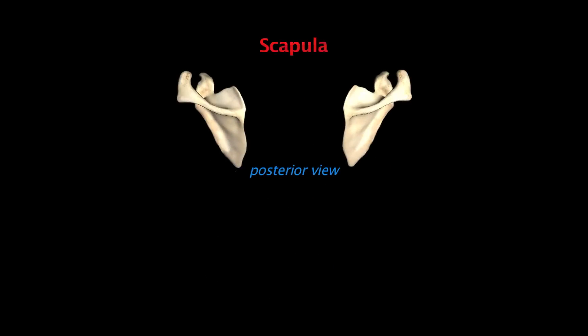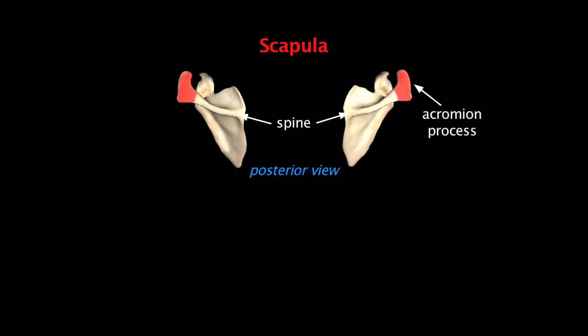The second bone that makes up the shoulder is the scapula. It's a flat triangular bone on the posterior lateral aspect of the thorax. Along the posterior surface of the scapula is a prominent ridge called the scapular spine, and at the lateral end of the spine is the acromion process, which articulates with the clavicle. Just anterior to the acromion process is another process called the coracoid process, which helps to stabilize the shoulder joint.